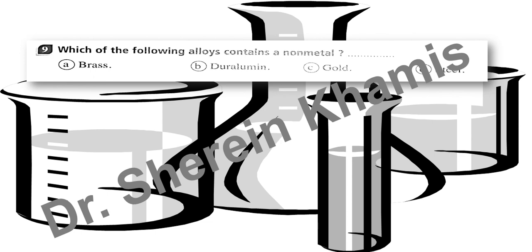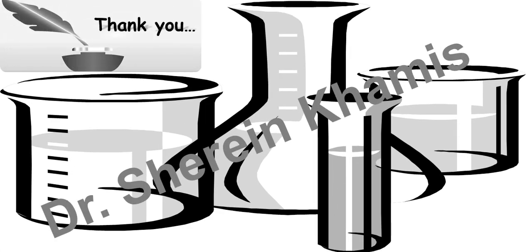The last question today: which of the following alloys contains a non-metal? The choices are brass, duralumin, gold, and steel. Steel is the substance that contains a non-metal in its alloy composition. We will continue with more questions for this unit — thank you for joining, I hope you enjoyed.